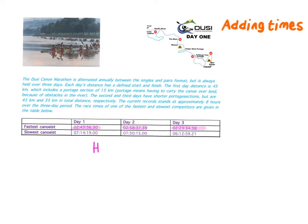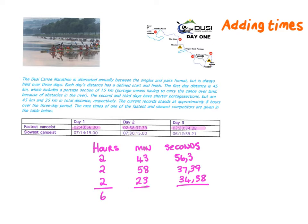So my suggestion is always to write it hours underneath each other, minutes underneath each other and seconds underneath each other. So on the first day, it was 2 hours, 43 minutes and 56.3 seconds. That is a decimal, so you can just leave it like that. On the second day, it was 2 hours, 58 minutes and 37.39 seconds. And on the third day, it was 2 hours, 23 minutes and 34.38 seconds. And we're now going to add up each of these columns, giving me 6 hours, 124 minutes and 128.07 seconds.